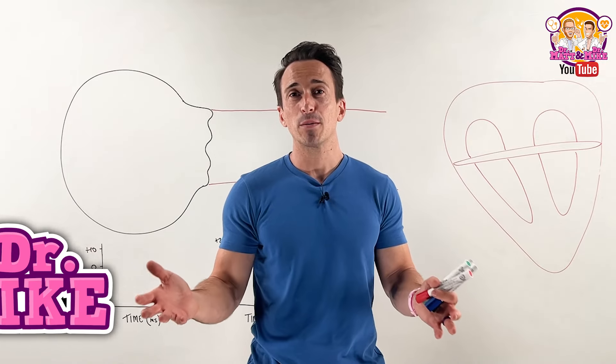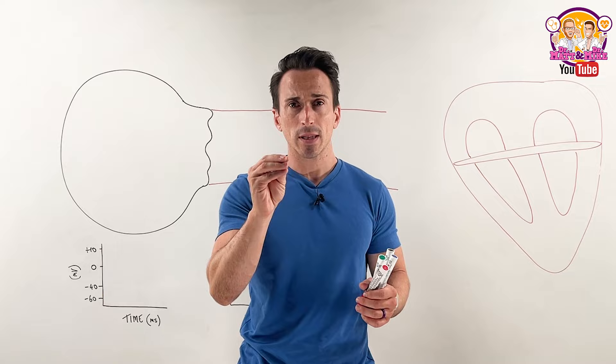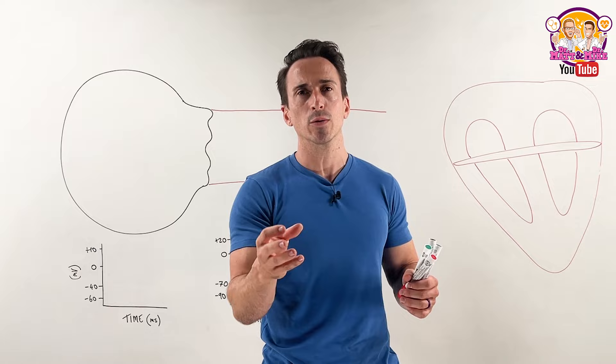Hi everyone, Dr. Mike here. In this video we're taking a look at cardiac action potentials - the different cells of the heart and how they depolarize, how they send signals in order for the heart muscle to ultimately contract. Let's take a look.